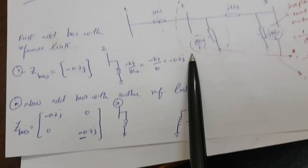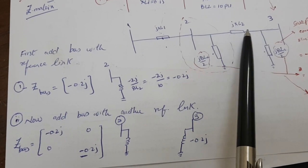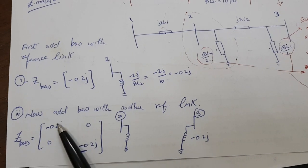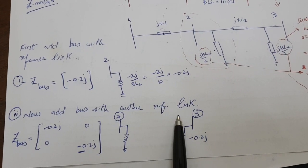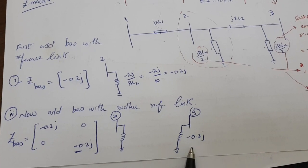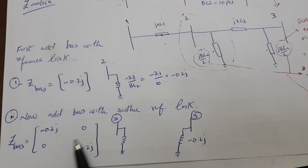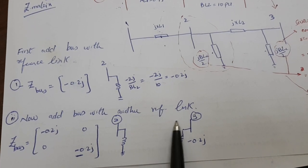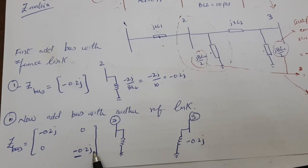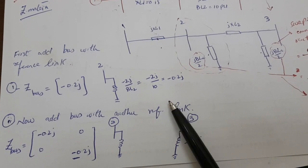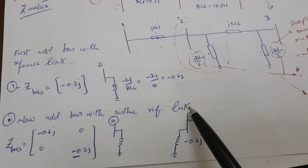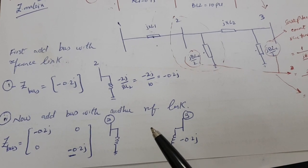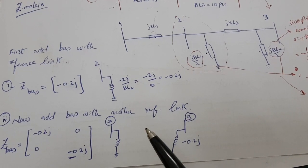The second step: we cannot connect bus two to bus three directly since there is reactance plus susceptance. First, solve for the susceptances. Add bus two with another reference link — bus three with minus 0.2j susceptance — making it zero since we are not yet handling bus two. The reactance of this bus is minus 0.2j. The next step is to add the link between bus two and bus three, which is rule number four: adding a line between two existing buses.